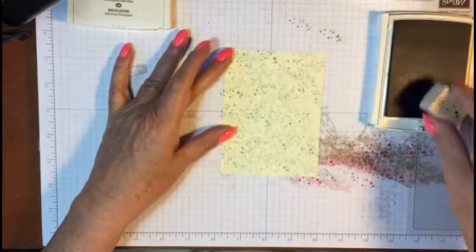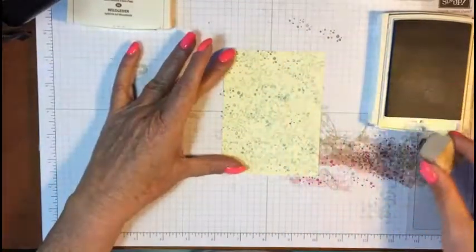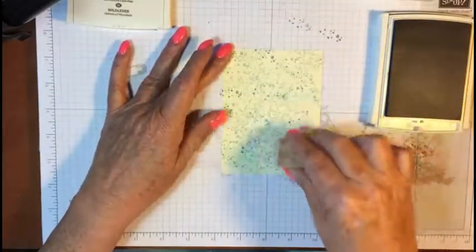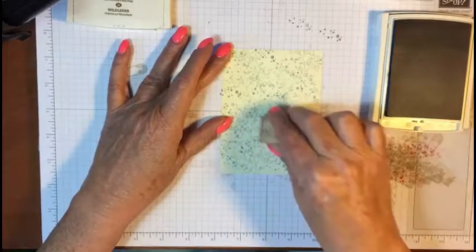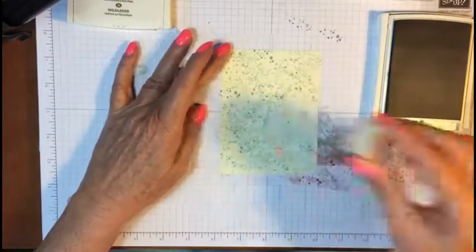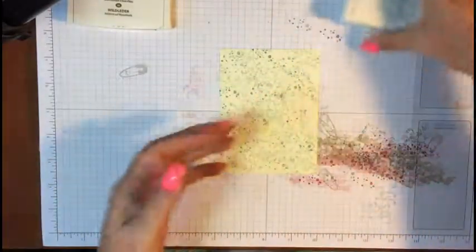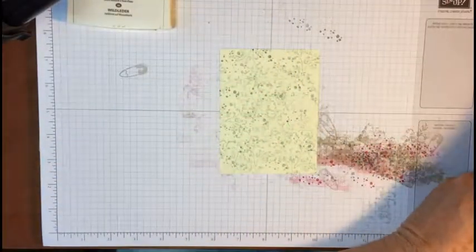Just wherever you see an empty spot, and you can even take this and finish cleaning off your stamp, add a few more of the faded kind in there.